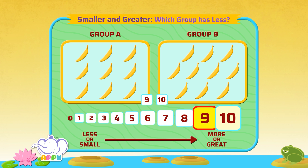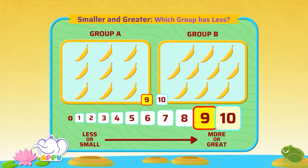So group A, which has 9 bananas, has less than group B, which has 10 bananas. I knew you could do it!